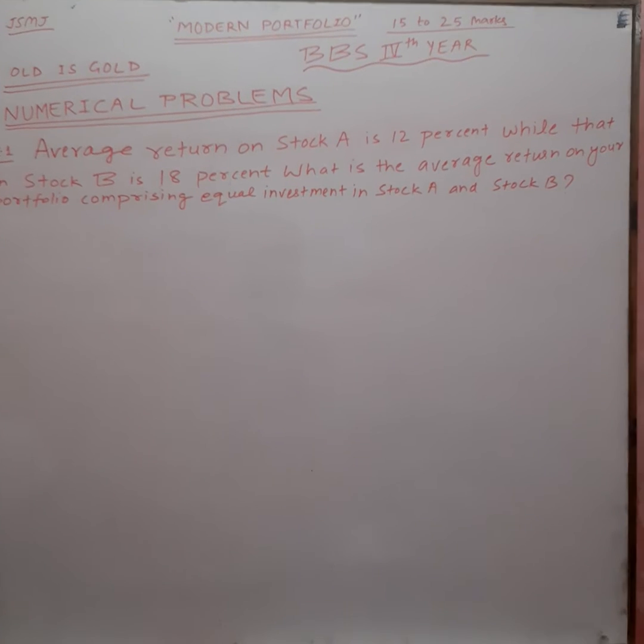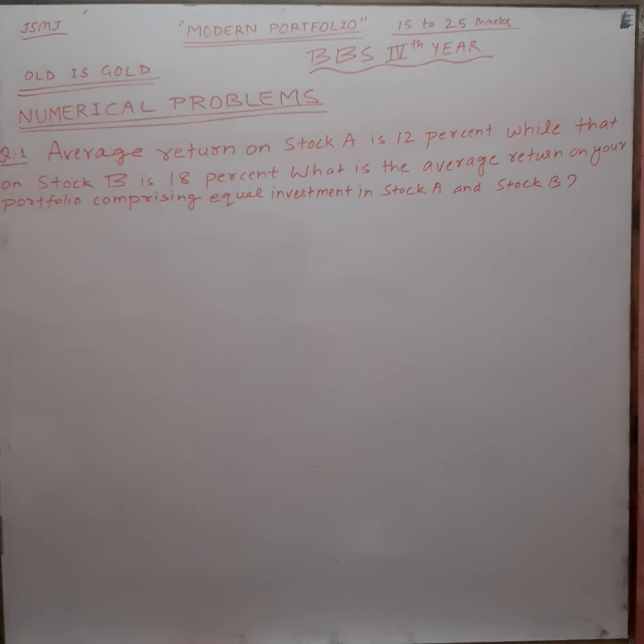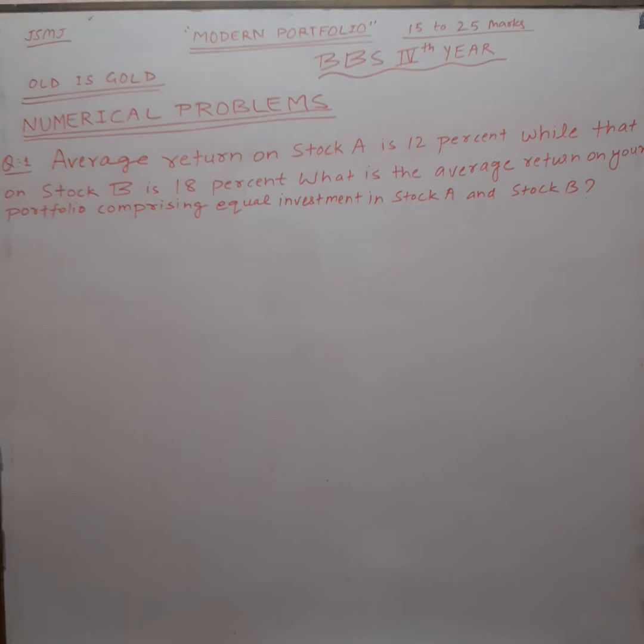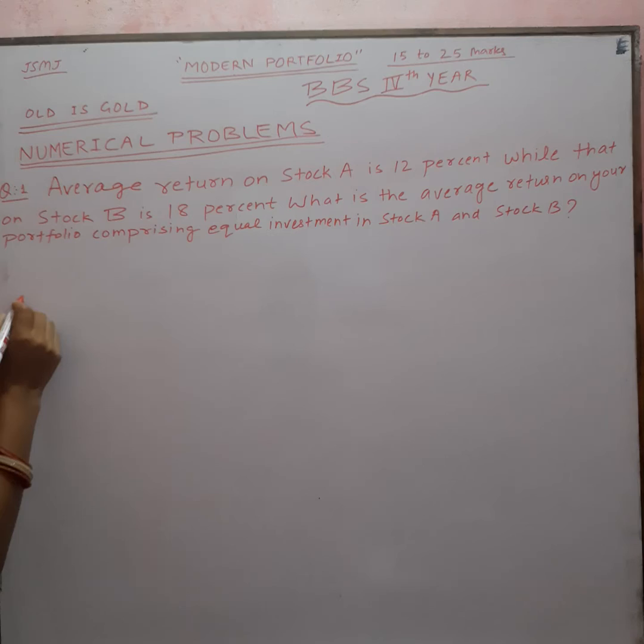The average return on stock A is 12% while that on stock B is 18%. What is the average return on our portfolio comprising equal investment in stock A and stock B?